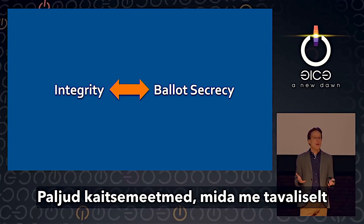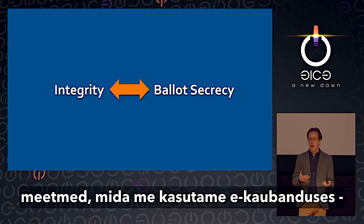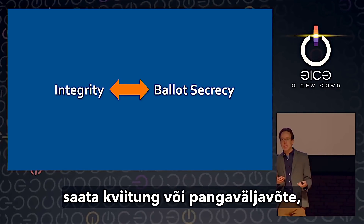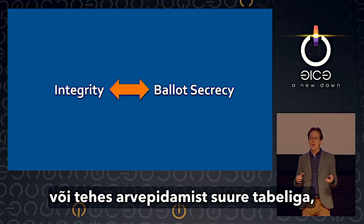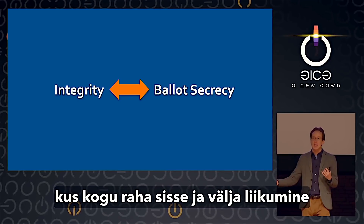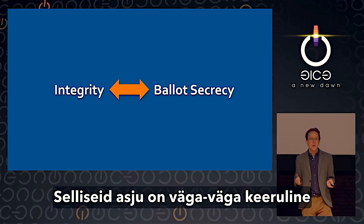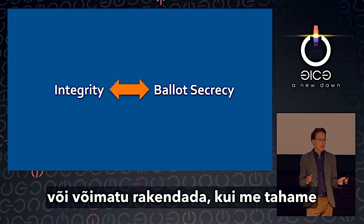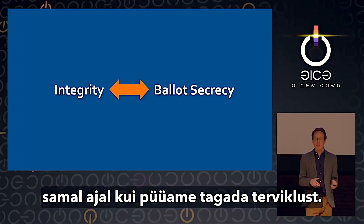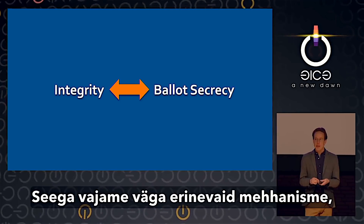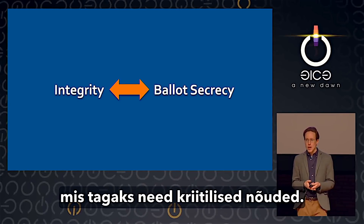Many defenses we might normally use to increase integrity — things like sending receipts or bank statements, or doing accounting with a big table where all transactions are totaled — are very difficult or impossible to implement if we want to maintain a secret ballot. So we need very different mechanisms to achieve an e-voting system that provides these critical properties.